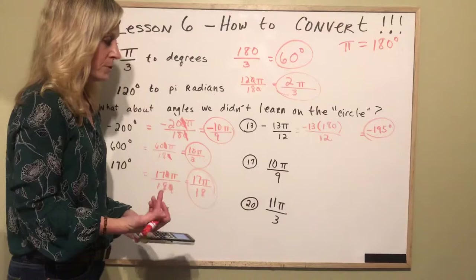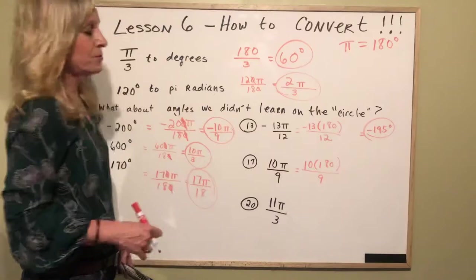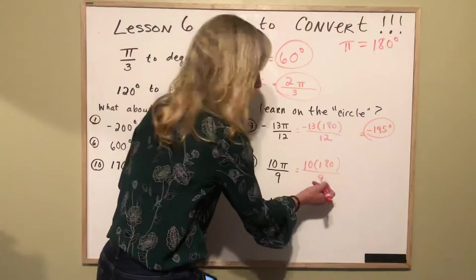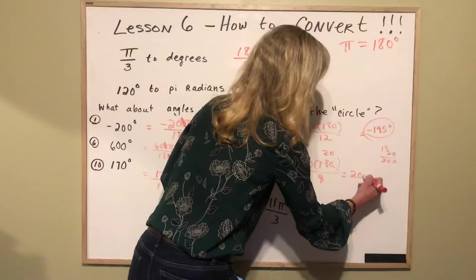Number 17, 10 times 180 divided by 9. Okay so let's not use a calculator for this one. So 9 goes into 18 two times so it goes into 180 twenty times and then 10 times 20 is 200 so you get 200 degrees.